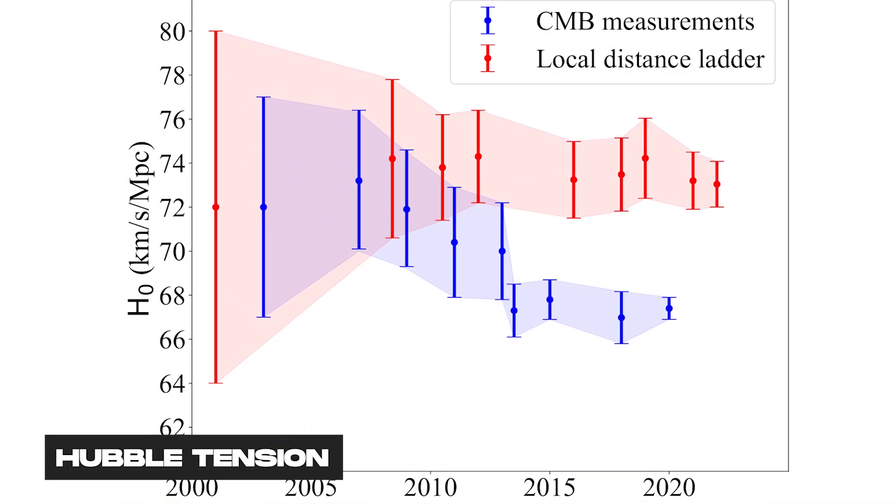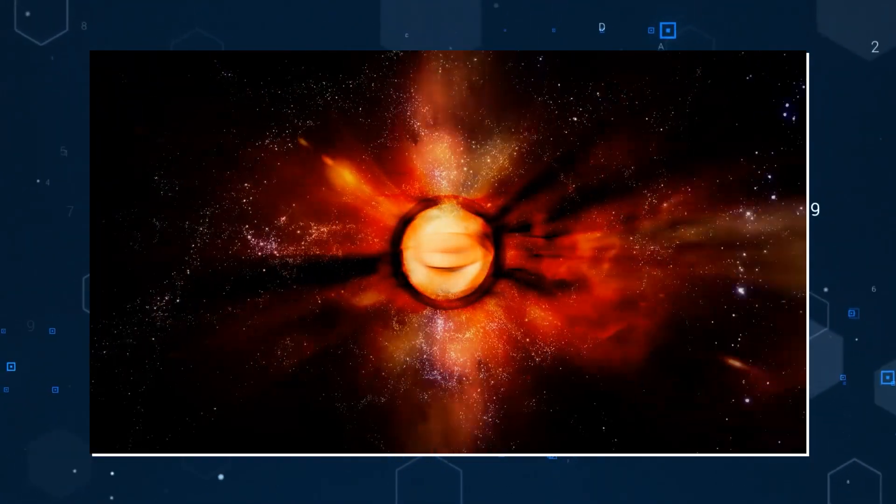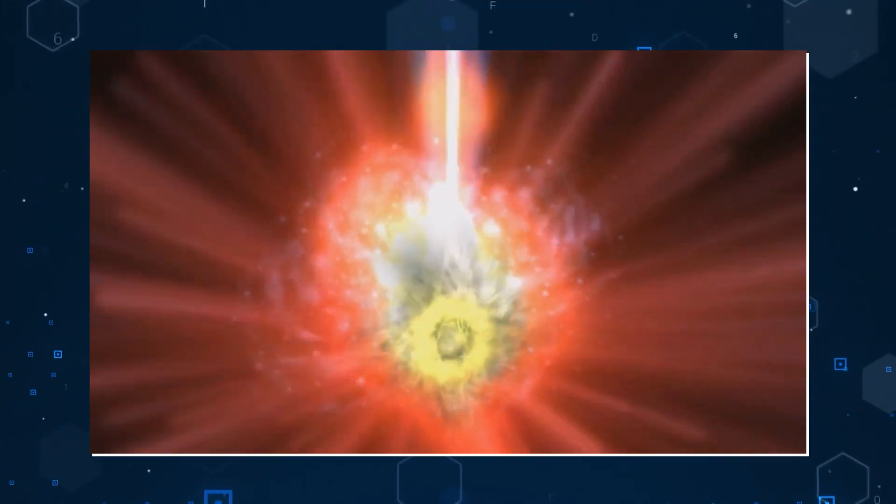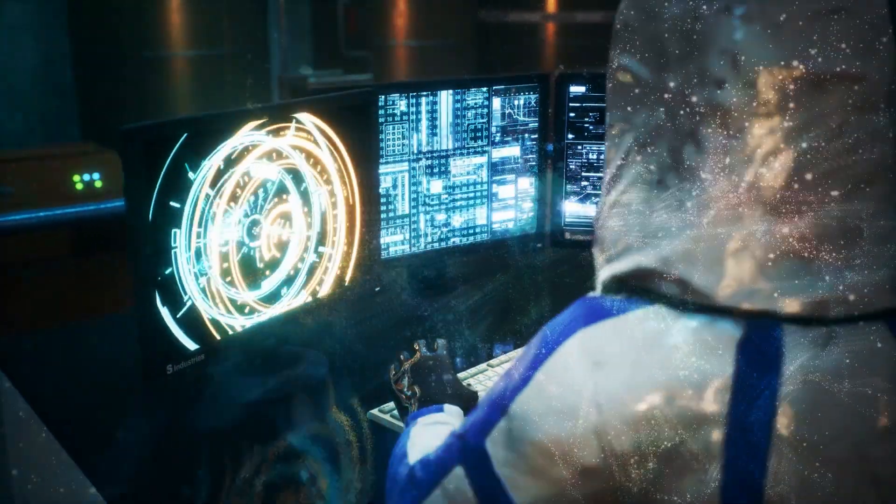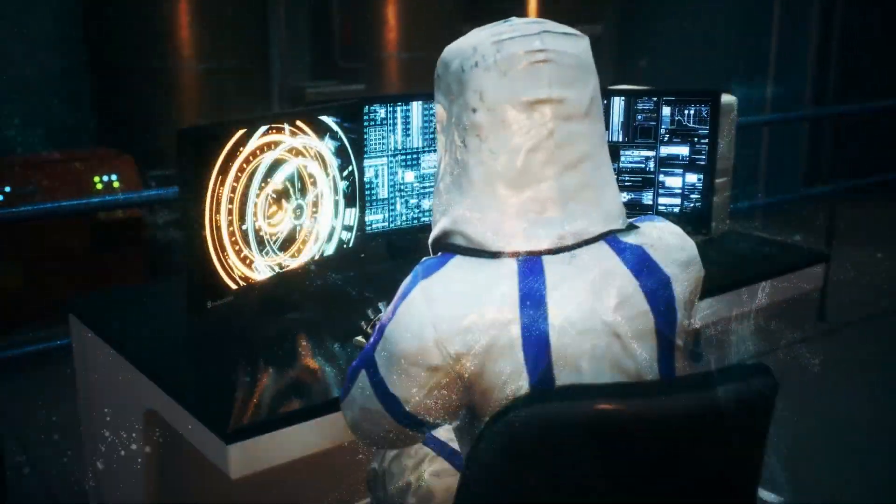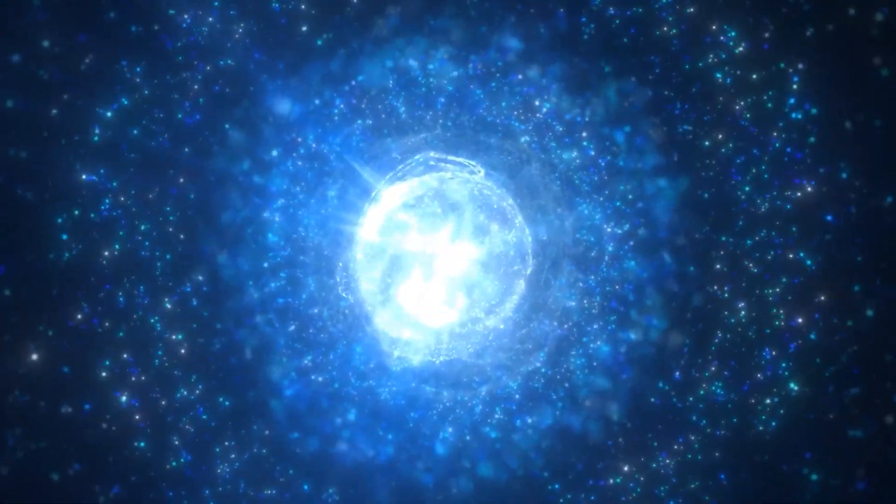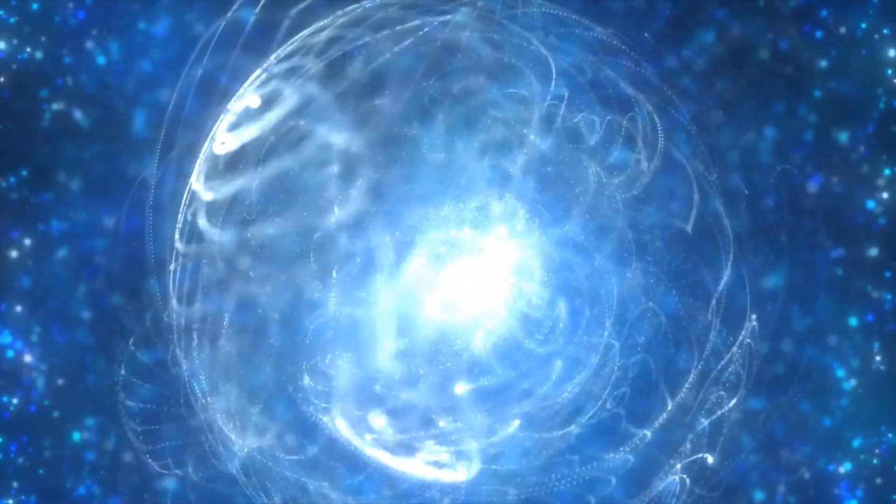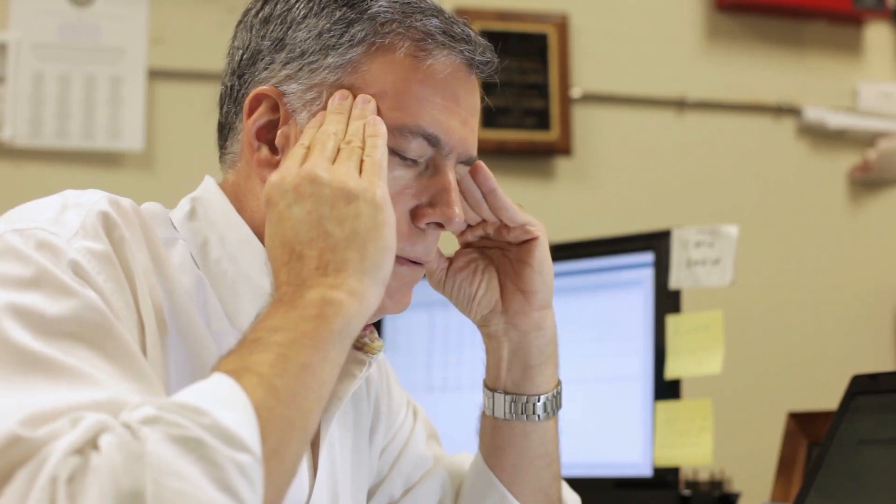This is what we call the Hubble Tension, a tug of war between two ways of measuring the same thing with no clear winner in sight. It's one of the most exciting and frustrating mysteries in modern science, but it could lead us to discover new secrets of the cosmos. Or it could just be a big headache that won't go away.